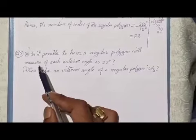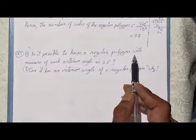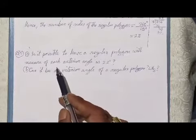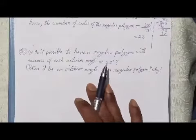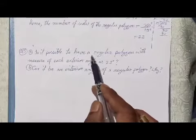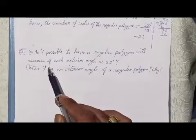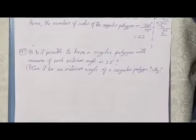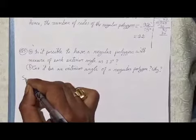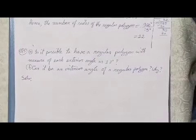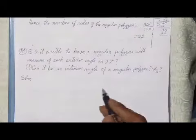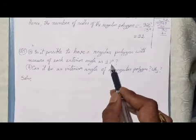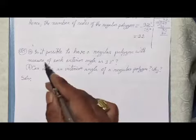Next is Question 5a: Is it possible to have a regular polygon with the measure of each exterior angle as 22 degrees? The question asks whether it is possible to have a regular polygon with each exterior angle equal to 22 degrees. Let's find out.